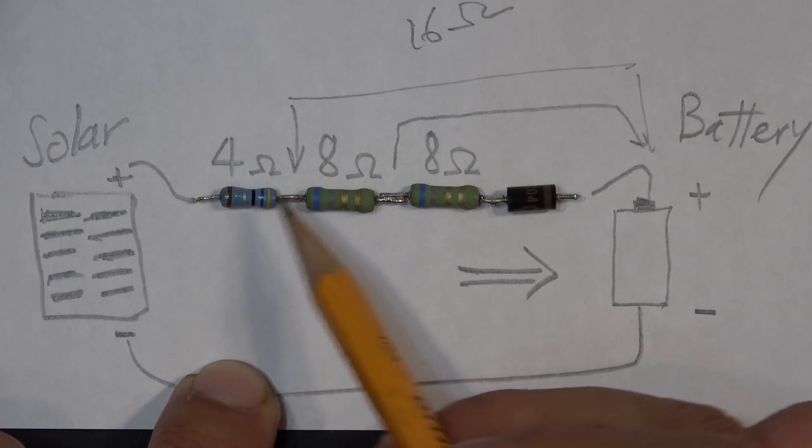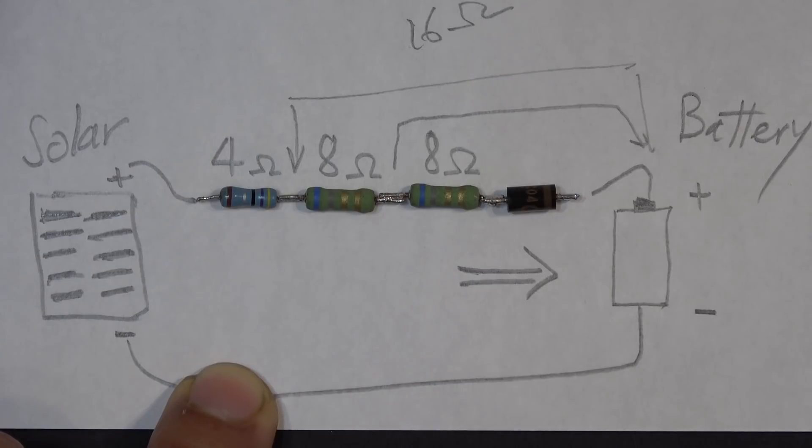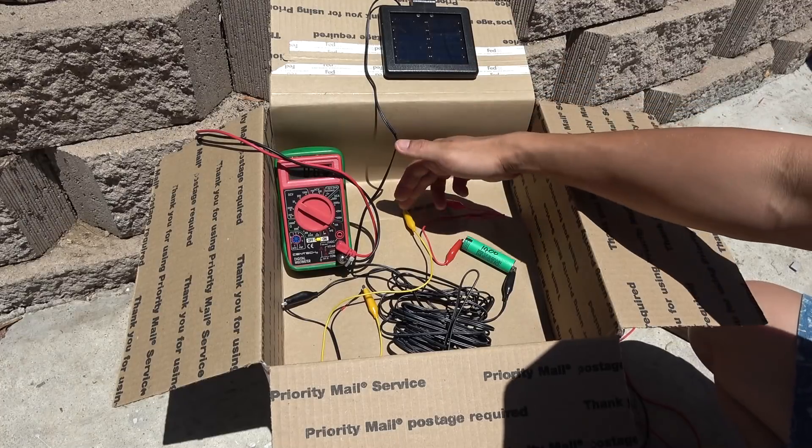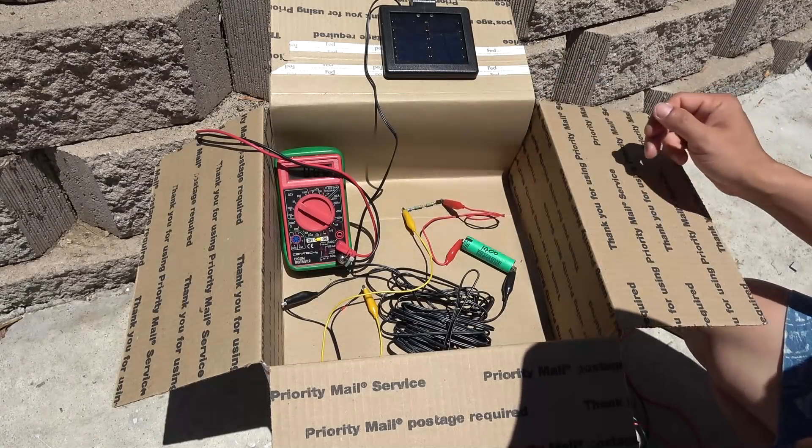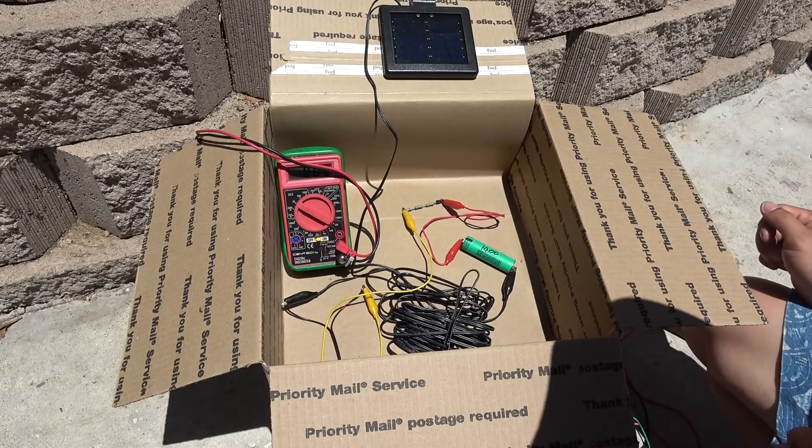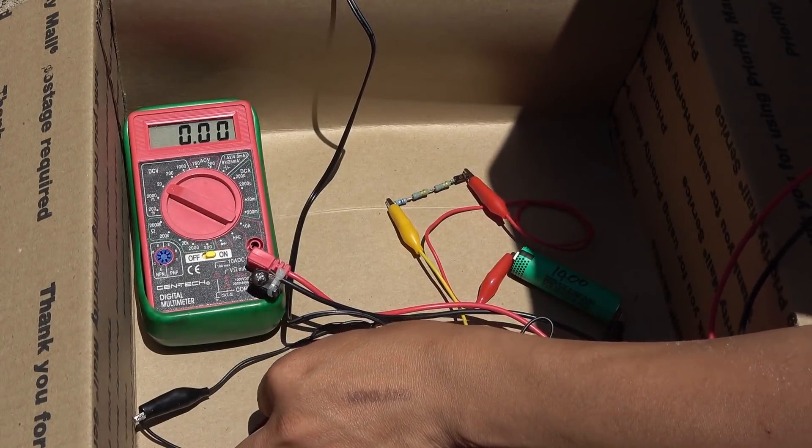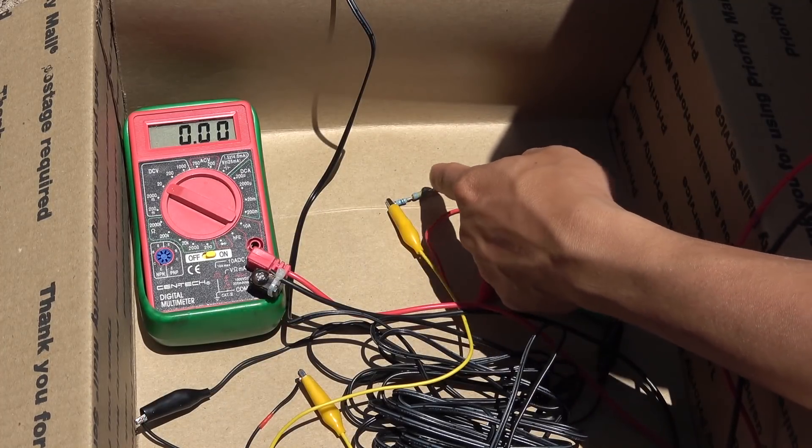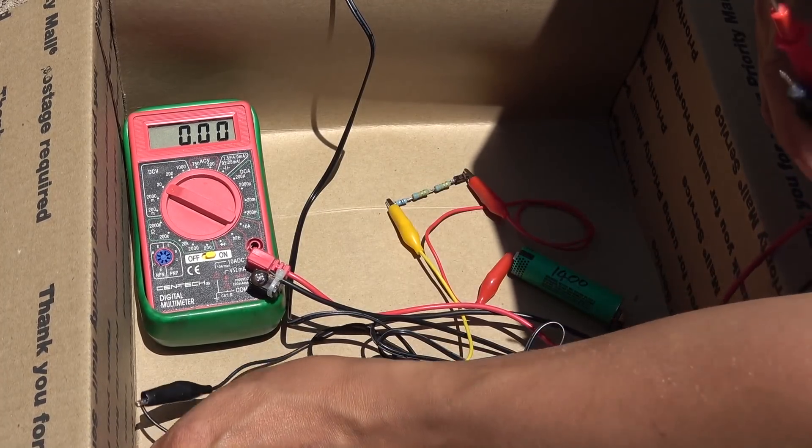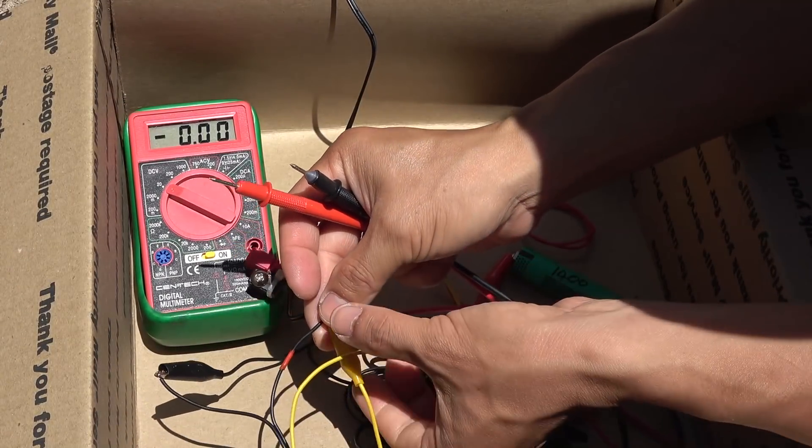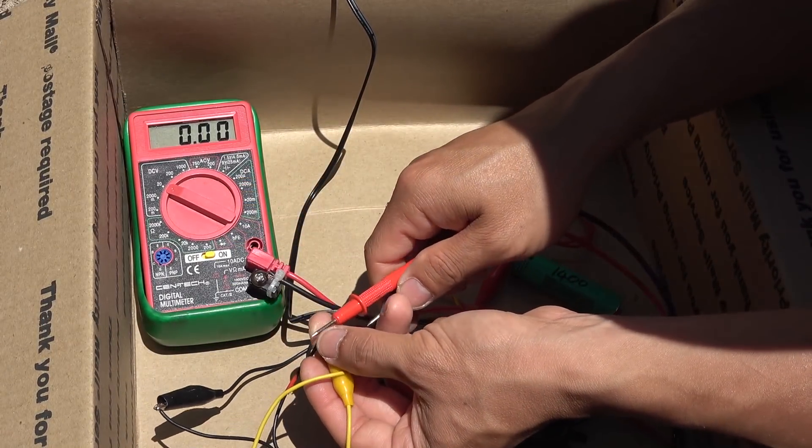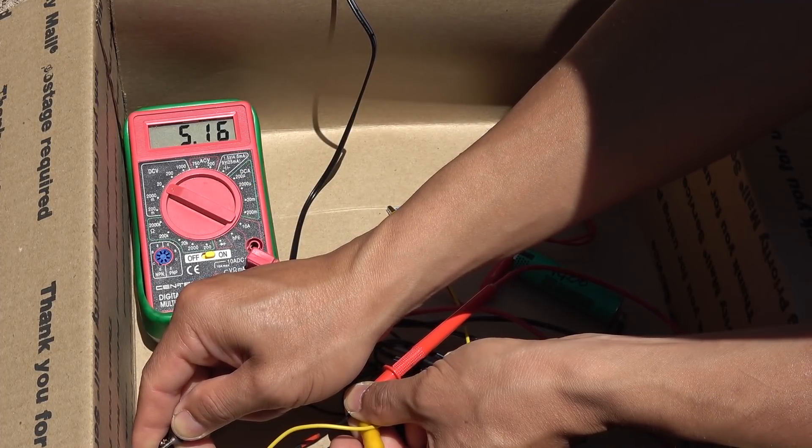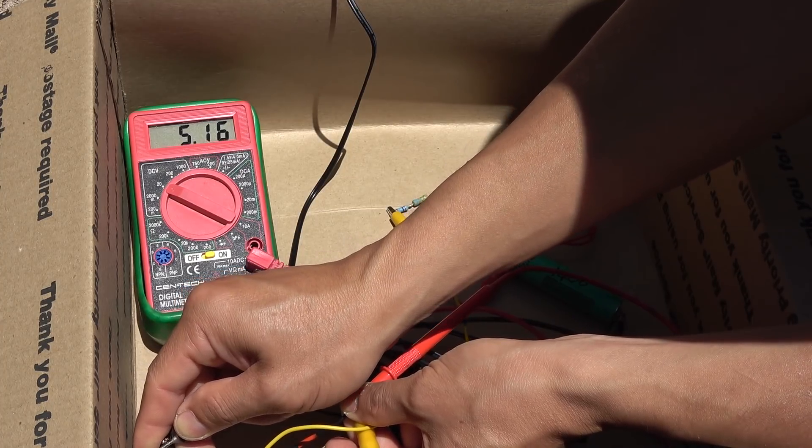Right now I have everything connected here: solar panel going through this series of resistors and diode and then going straight to the battery. First, what I'm going to do is measure the voltage of the solar panel when it's under load before it gets to this series. This is the wire coming from the solar panel: 5.15 volts, 5.16 volts.